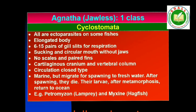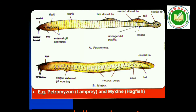Class Cyclostomata. All living members of the class Cyclostomata are ectoparasites on some fishes. They have an elongated body bearing 6–15 pairs of gill slits for respiration. Cyclostomes have a sucking and circular mouth without jaws. Their body is devoid of scales and paired fins. Cranium and vertebral column are cartilaginous. Circulation is of closed type. Cyclostomes are marine but migrate for spawning to fresh water. After spawning, within a few days, they die. Their larvae, after metamorphosis, return to the ocean. Examples: Petromyzon (also called lamprey) and Myxine (also called hagfish).